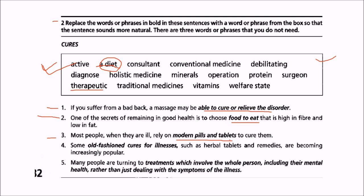Third will match with conventional medicine. Fourth: some old-fashioned cures for illnesses such as herbal tablets are becoming increasingly popular. These are actually traditional medicines — in India we call them Ayurvedic medicines, made of herbs. Fifth: when people are turning to treatments which involve the whole person including their mental health, rather than just dealing with the symptoms of the illness, this matches with holistic medicine. An example of this is aromatherapy.